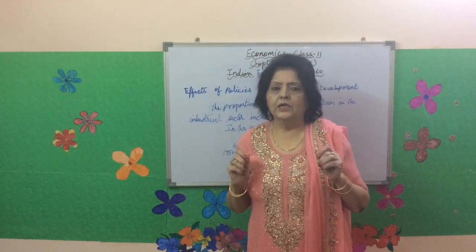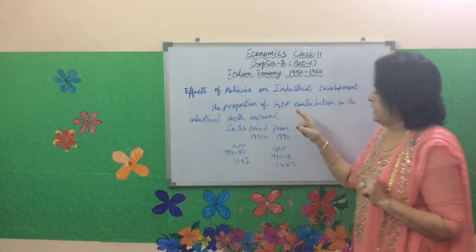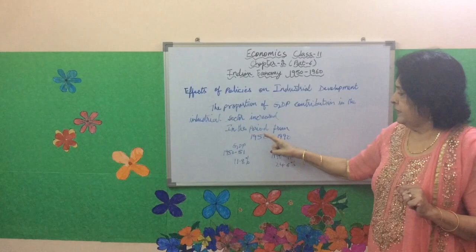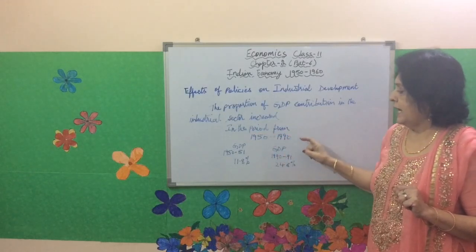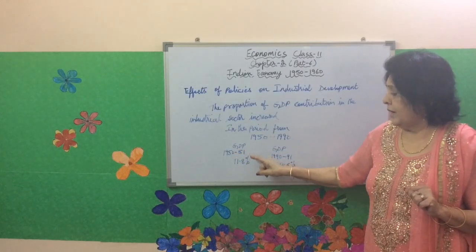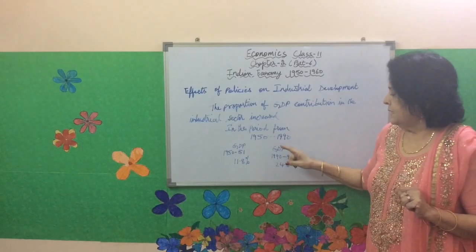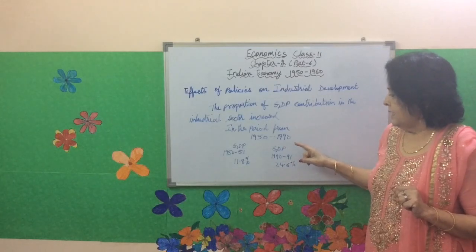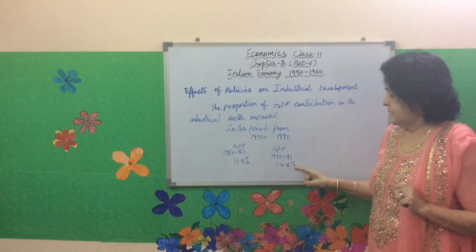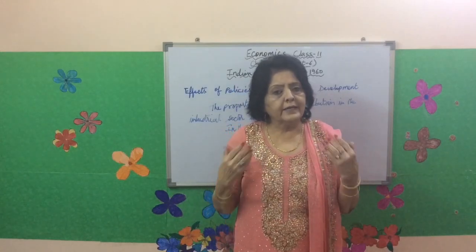Regarding the effects of these policies on industrial development: the development in the industrial sector in the first seven year plans is quite impressive. The proportion of GDP contributed by the industrial sector increased from 1950 to 1990. The GDP share of industry in 1950-51 was 11.8 percent, whereas by 1990-91 it had increased to 24.6 percent. This increase in GDP is quite encouraging.